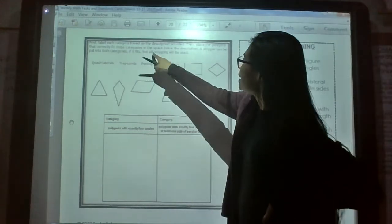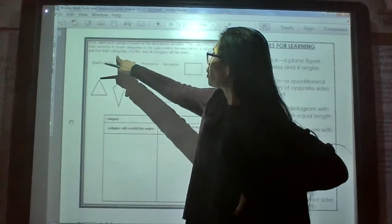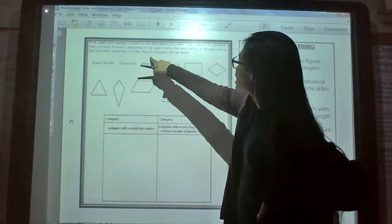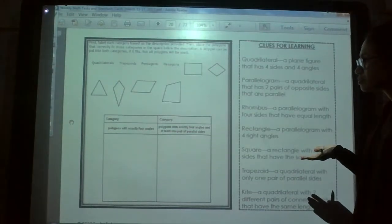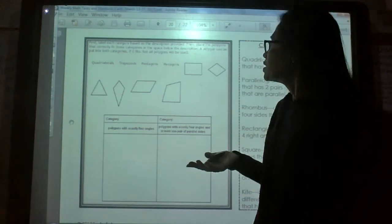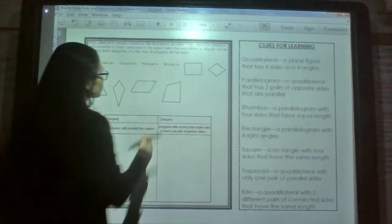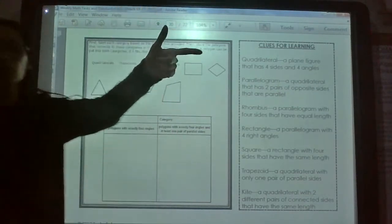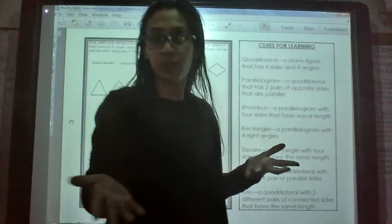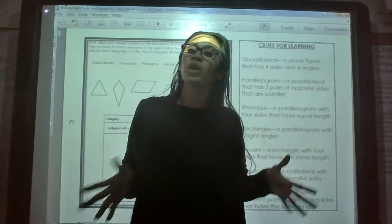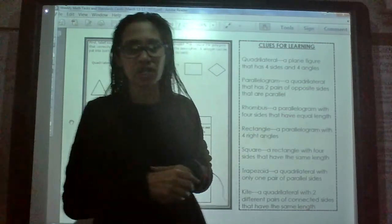Then place the polygons that correctly fit those categories in the space below the description. A polygon can be put into both categories if it fits — not all polygons will be used. Before we continue, I want to go over our clues for learning. You can look at them in your book or write them in your journal — study them every day until you become an expert about polygons, especially quadrilaterals.